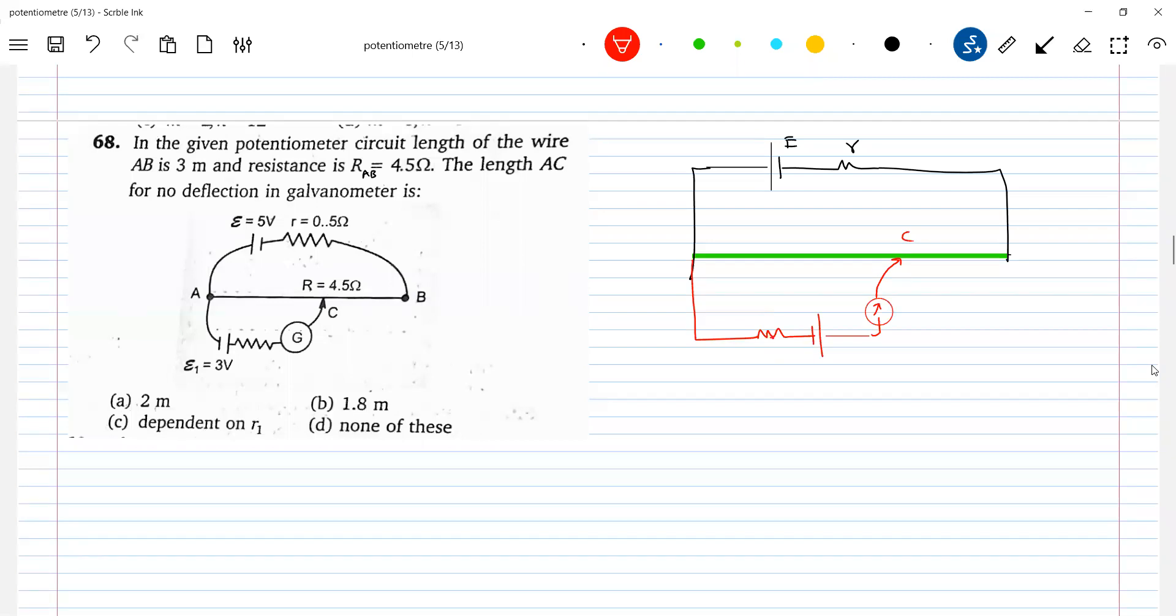It is asking to calculate this length AC. Let me say this is lambda. We know all the values: 5 volt, 0.5, and this is 3 volt. What is the current through galvanometer? Should be zero for no deflection.